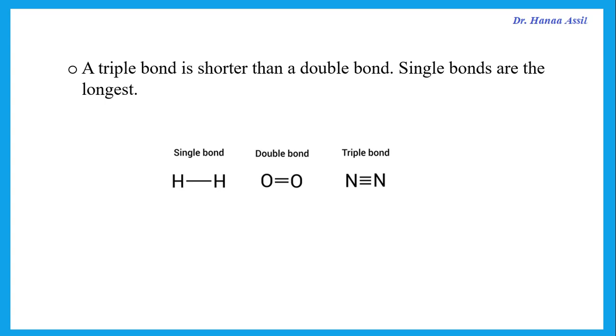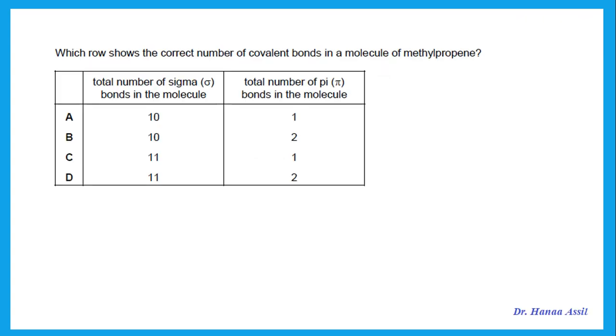Remember that a triple bond is always shorter than a double bond, and the double bond is shorter than a single bond when comparing bond lengths.